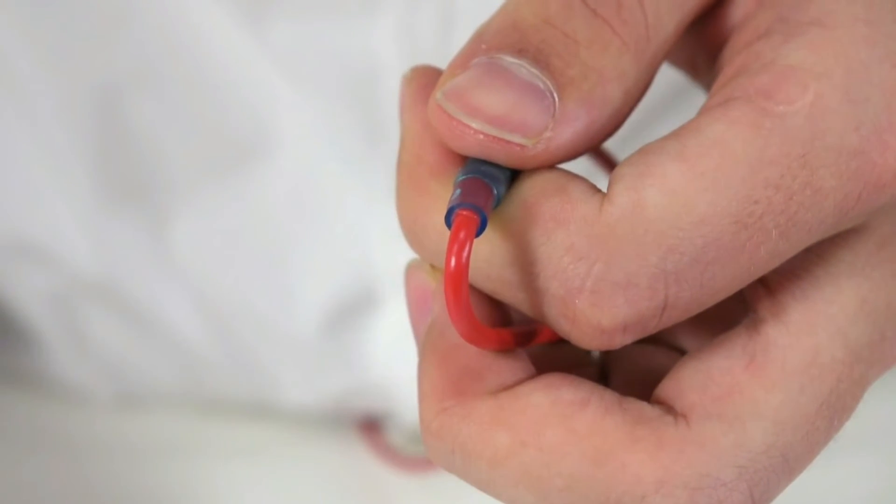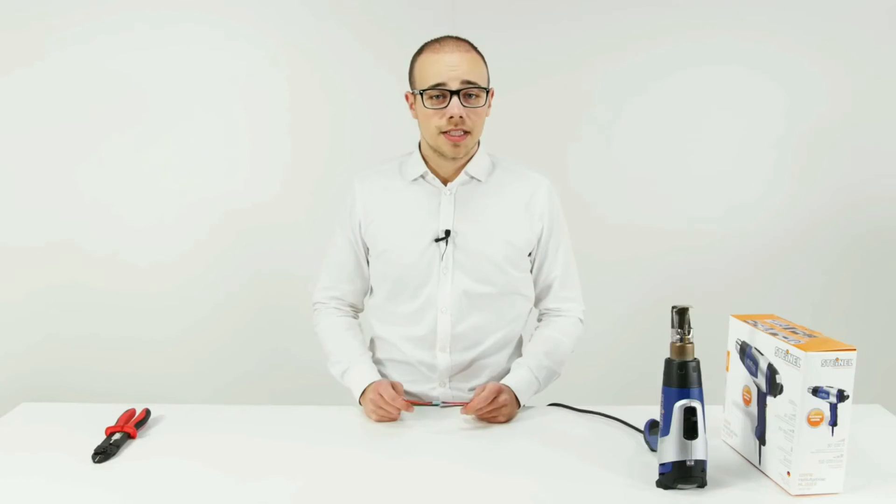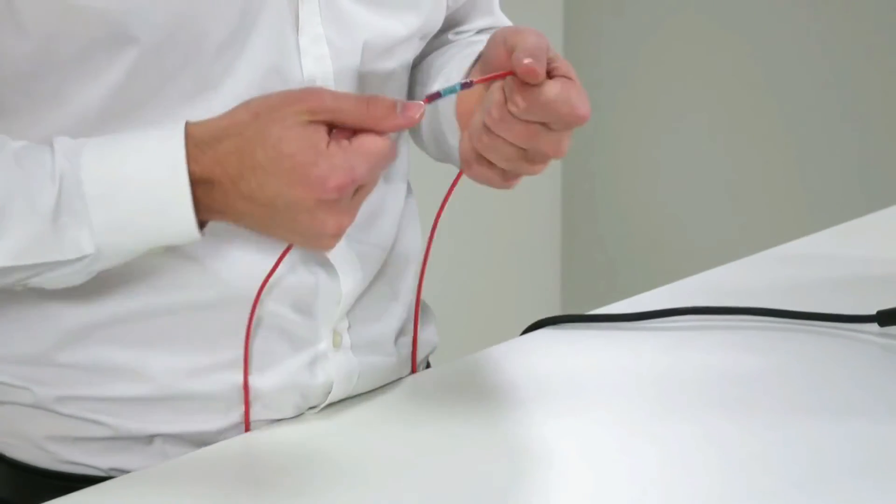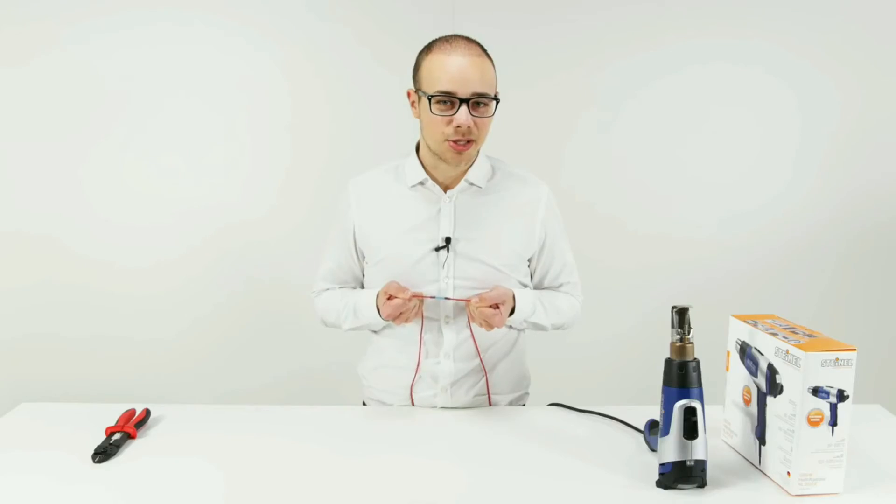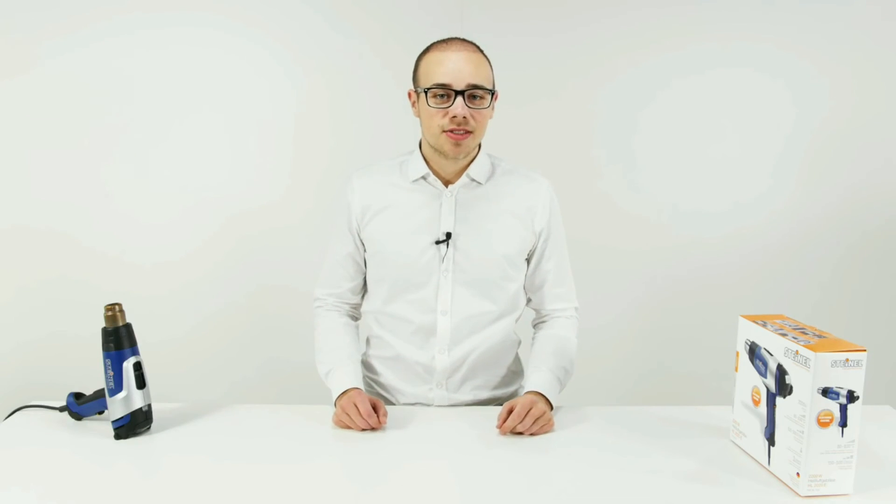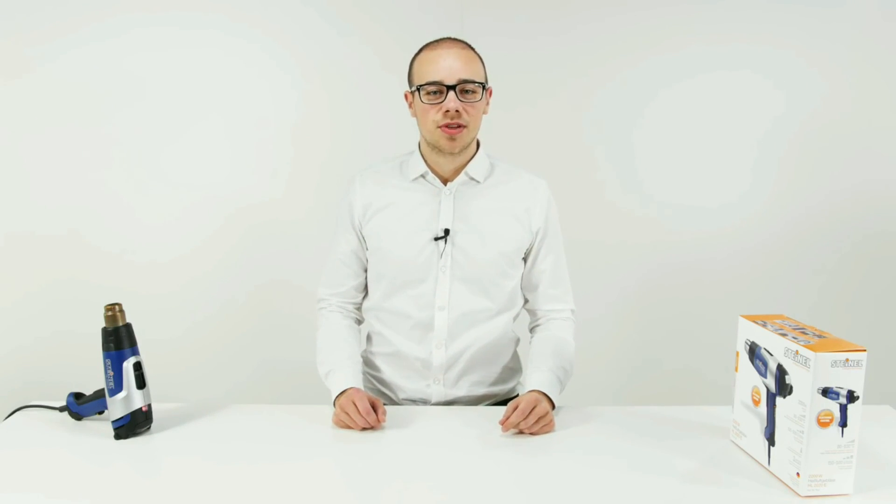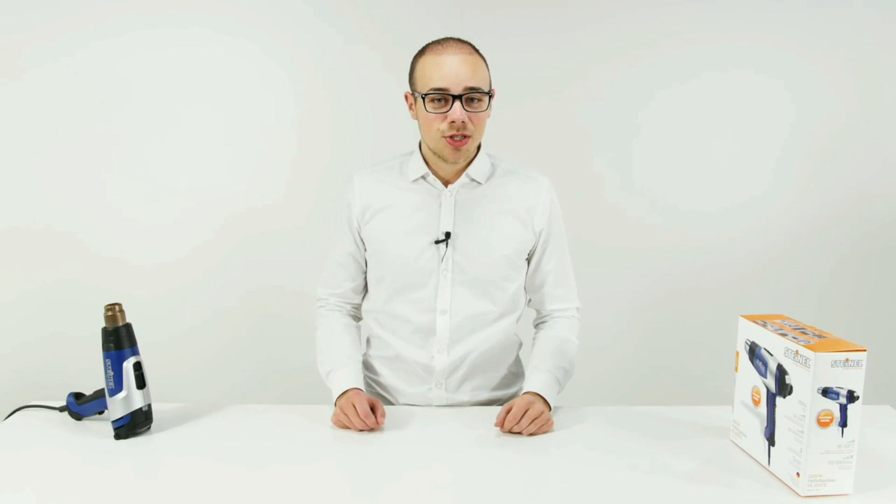The ends of the crimp connector joining the cable have to be perfectly fitted and tight. Once you pull it on either side, you can see that the joint does not give way. This creates a perfect watertight buttressed joint. Thank you for watching this demonstration.